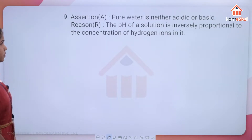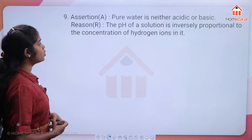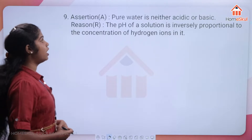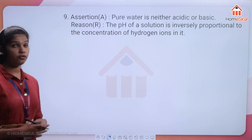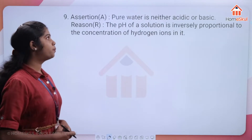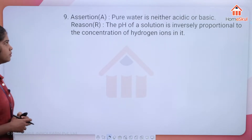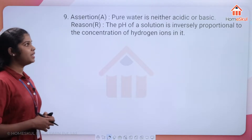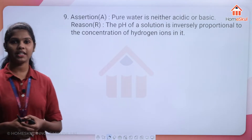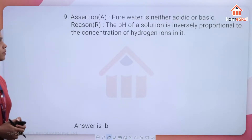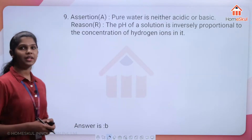Question 9 — Assertion: pure water is either acidic or basic. Reason: the pH of a solution is inversely proportional to the concentration of hydrogen ions in it. The assertion is false (pure water is neutral, pH 7), but the reason statement about pH being inversely proportional to hydrogen ion concentration is true. This makes option C the right answer.